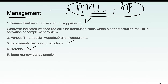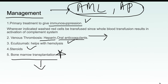Drugs like eculizumab help with the hemolysis. For venous thrombosis, heparin and oral anticoagulants are used. Bone marrow transplantation (stem cell transplantation) is the curative treatment, though it has its own complications. For blood transfusion, washed red blood cells should be given, because whole blood transfusion activates the complement system and worsens hemolytic anemia.